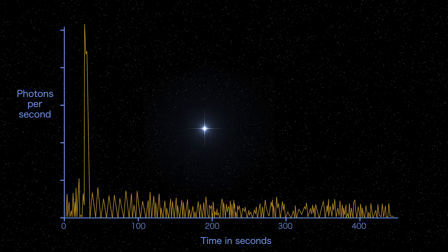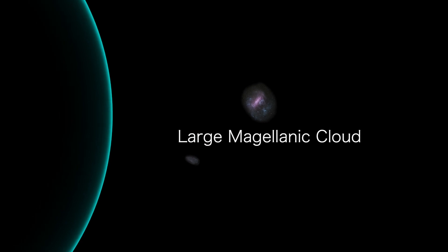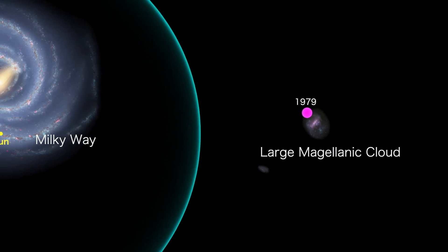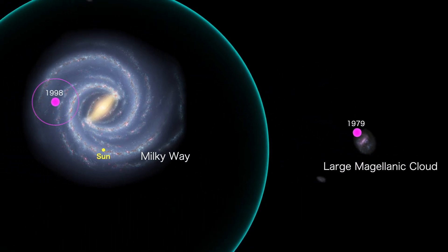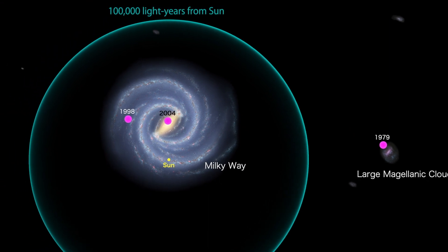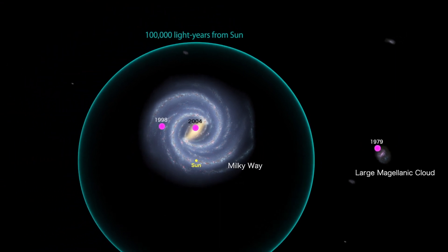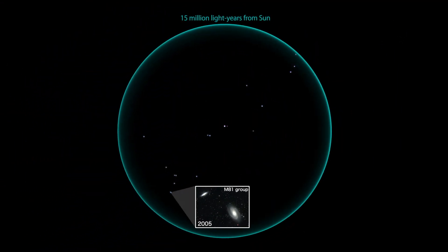But other characteristics, such as their extremely fast rise in brightness, are unmatched by short GRBs. This fueled astronomers' growing suspicions that short GRBs associated with galaxies in our neighborhood might really be magnetar giant flares.